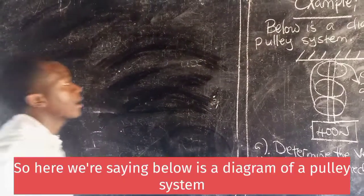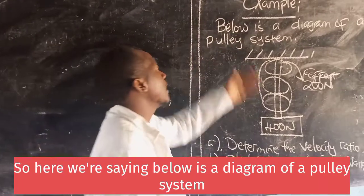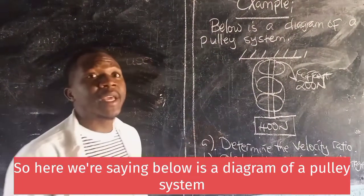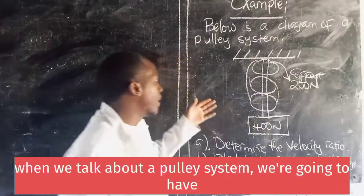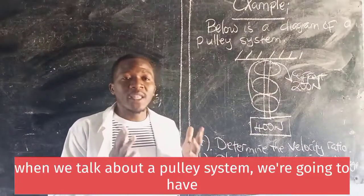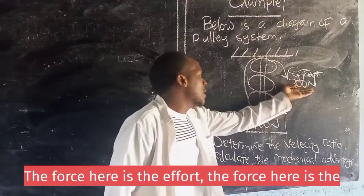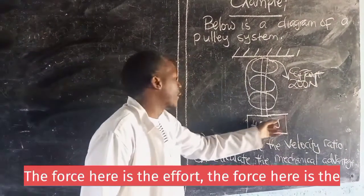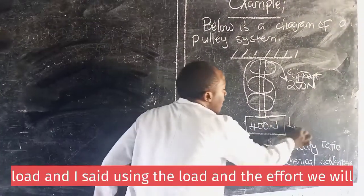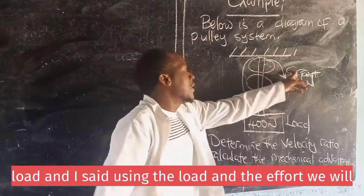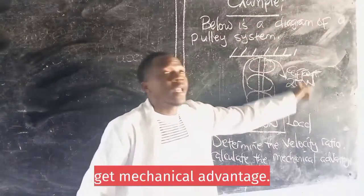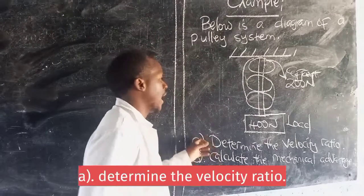So, here we are saying below is a diagram of a pulley system. When we talk about a pulley system, we are going to have a diagram with wheels and labeled forces. The force here is the effort. The force here is the load. And I said, using the loads and the efforts, we will get mechanical advantage.